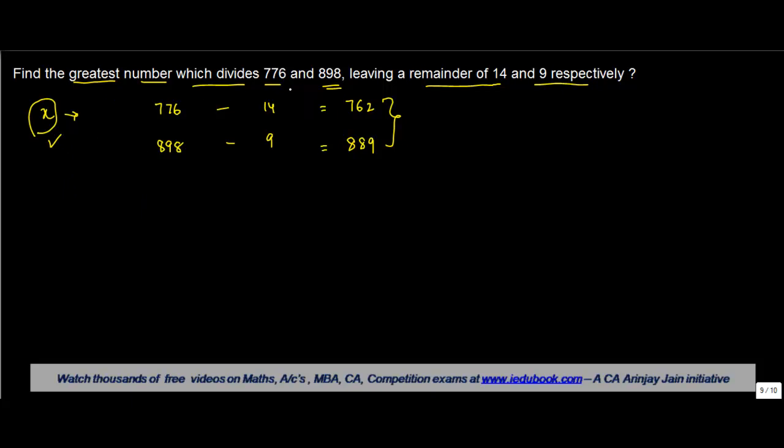Now which is the greatest number which divides two given numbers? The greatest common number which divides any two numbers is the HCF of those two numbers. So let's find it out by division method.